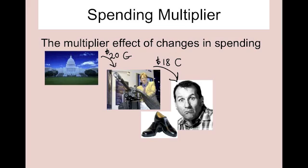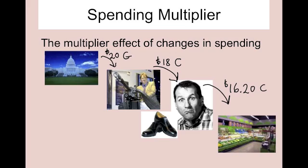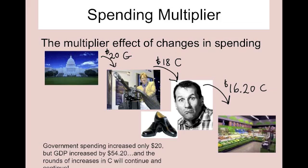Al Bundy is going to get the money, save some, and then spend the rest — buy some groceries. And then the grocery store owner is going to get the money, save some, spend the rest. Next level, save some, spend the rest — and it continues on and on. So in just these transactions, the government spending increased by only $20, but GDP increased by $54.20. And it's going to be even more because the rounds of consumption spending will continue.